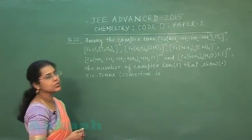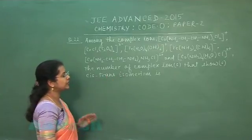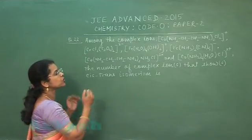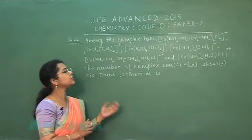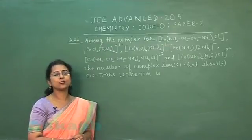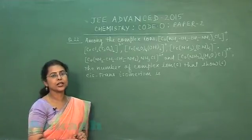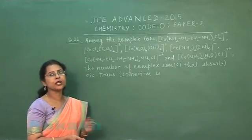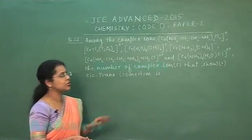Among the given complex ions, the number of complex ions that show cis-trans isomerism is to be determined. We have to find out how many of the given complex ions can show cis-trans isomerism. Cis-trans isomerism, also called geometrical isomerism, is present in octahedral complexes having two types of ligands that differ in their position in three-dimensional space.